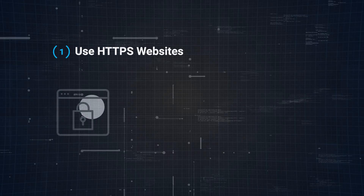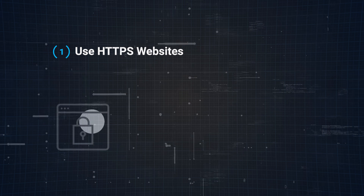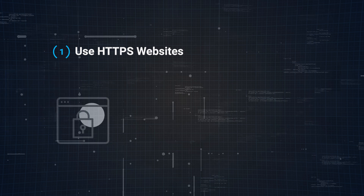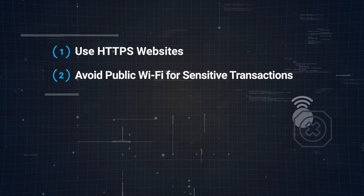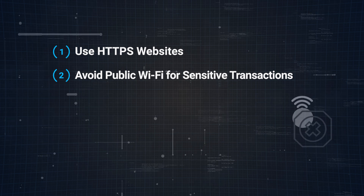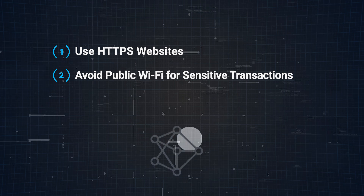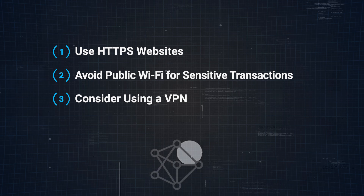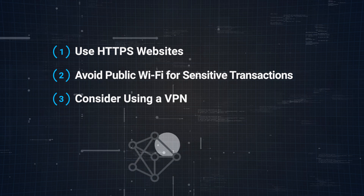Man-in-the-middle attacks are a bit tricky and hard to detect because everything looks normal on the surface. Here are tips to protect yourself. Number one, use HTTPS websites — always check for the padlock symbol and HTTPS in the address bar, indicating a secure connection that encrypts your data during transmission. Number two, avoid public Wi-Fi for sensitive transactions — use mobile data or a secure network for tasks like online banking, as public Wi-Fi is often less secure. Number three, consider using a VPN — a VPN encrypts your internet traffic, making it harder for attackers to intercept your data.